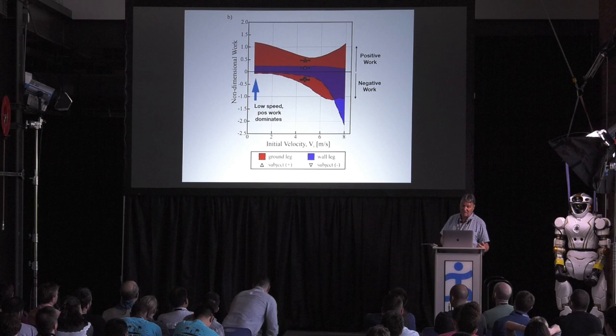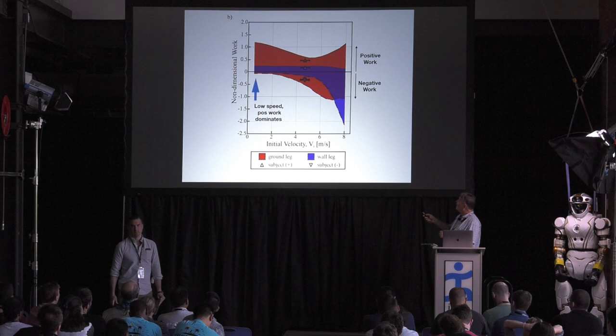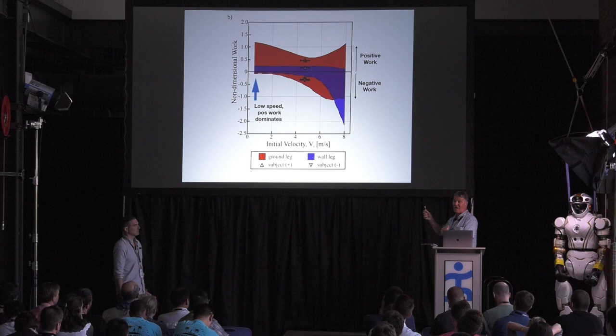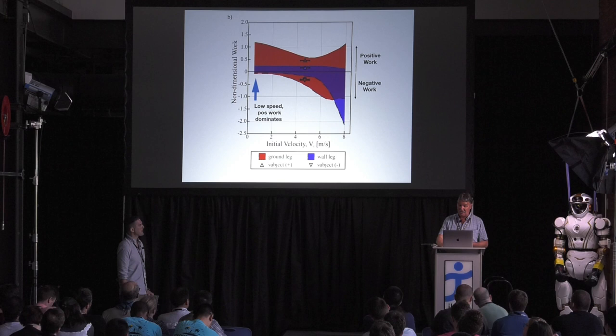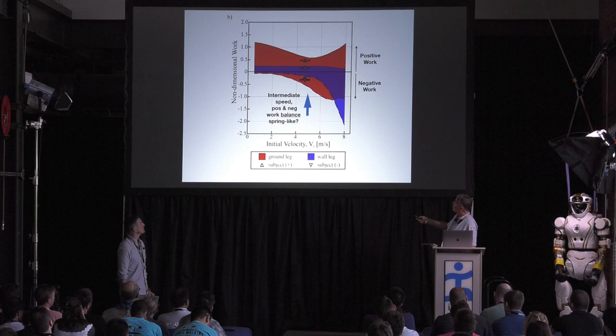So what we have here is the positive work bounded, negative work bounded, red for the ground, blue for the wall leg. We've colored in the space, that's not an area, but the precise measurements are those bounds. But just to show how this system works, low speed, positive work dominates, high speed, substantial negative work and positive work to manage the trajectory. Intermediate speed, positive and negative work balance. And that's one definition of a spring.